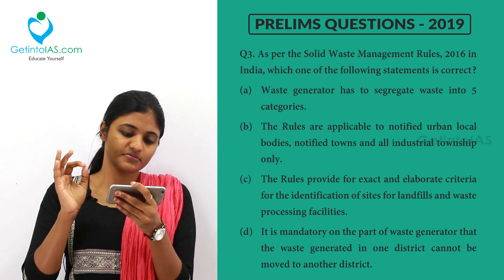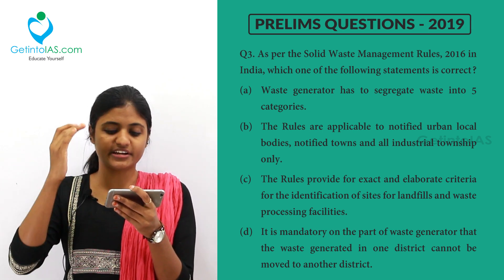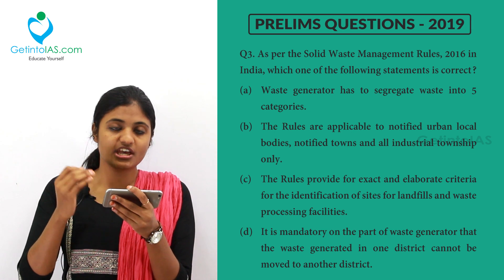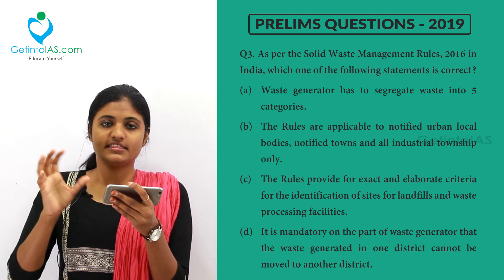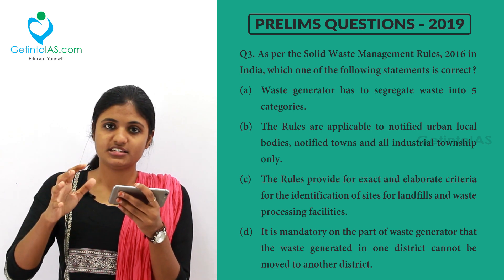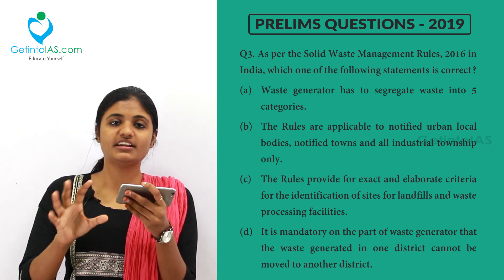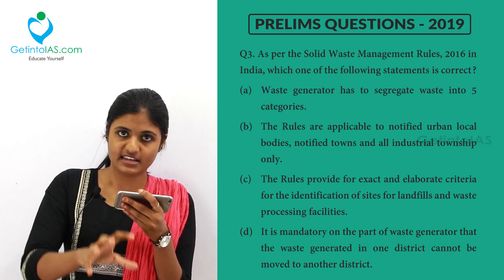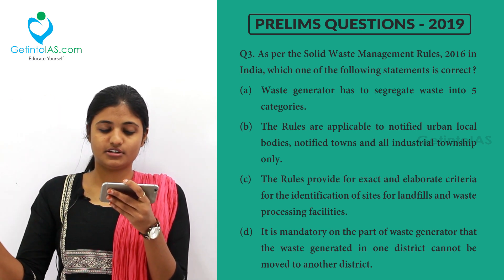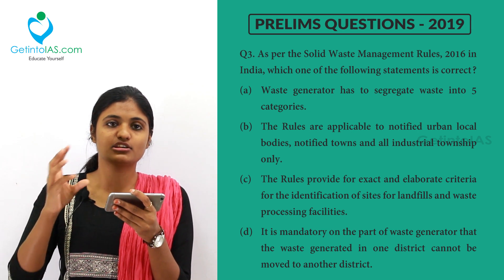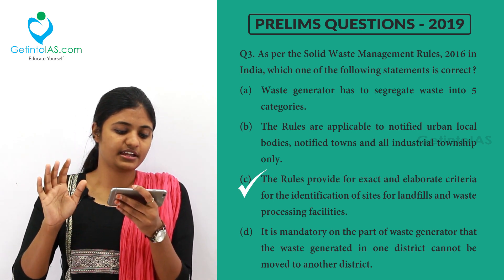Coming to the third option, the rules provide exact and elaborate criteria for the identification of sites for landfills and waste processing facilities. Landfills are the places where you dump all your waste, and after dumping you take that for processing. This is given elaborately in the solid waste management rules of 2016. So option C is correct.